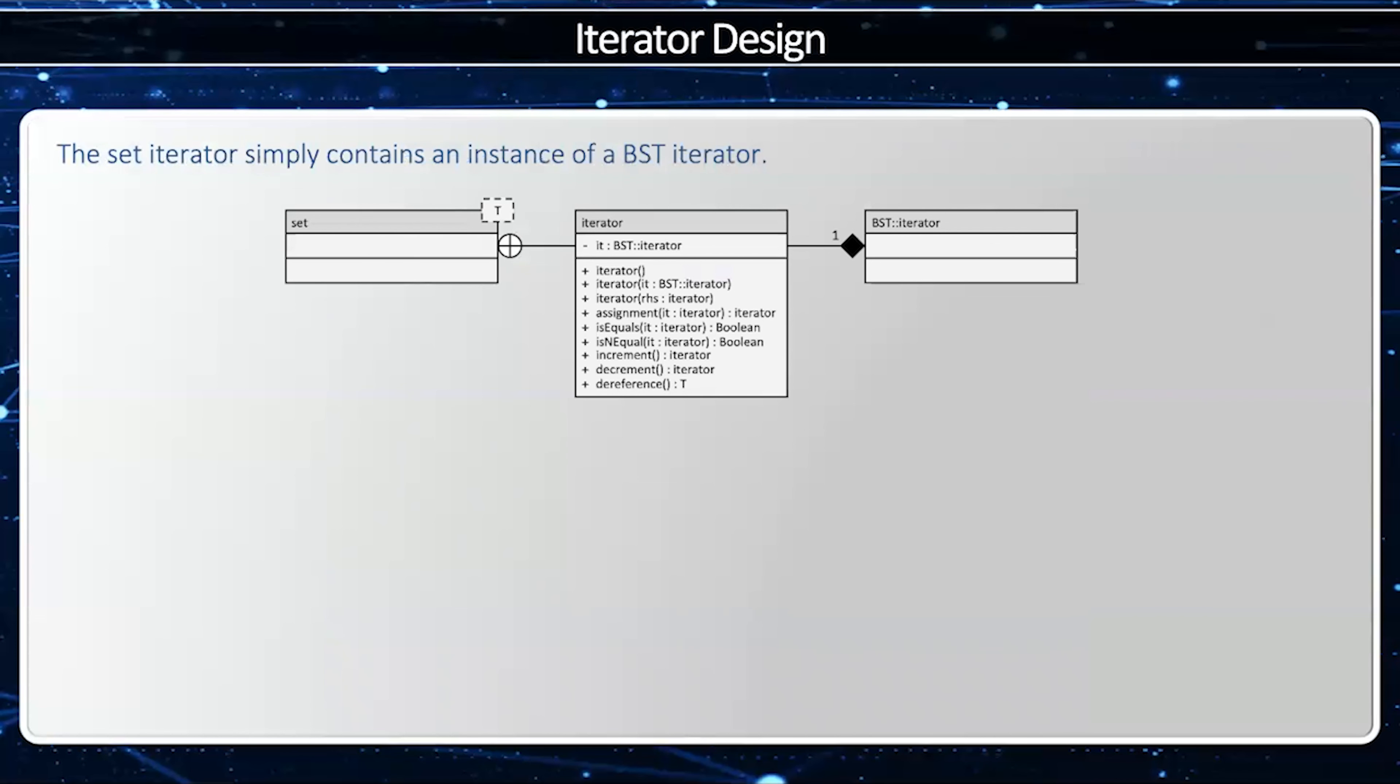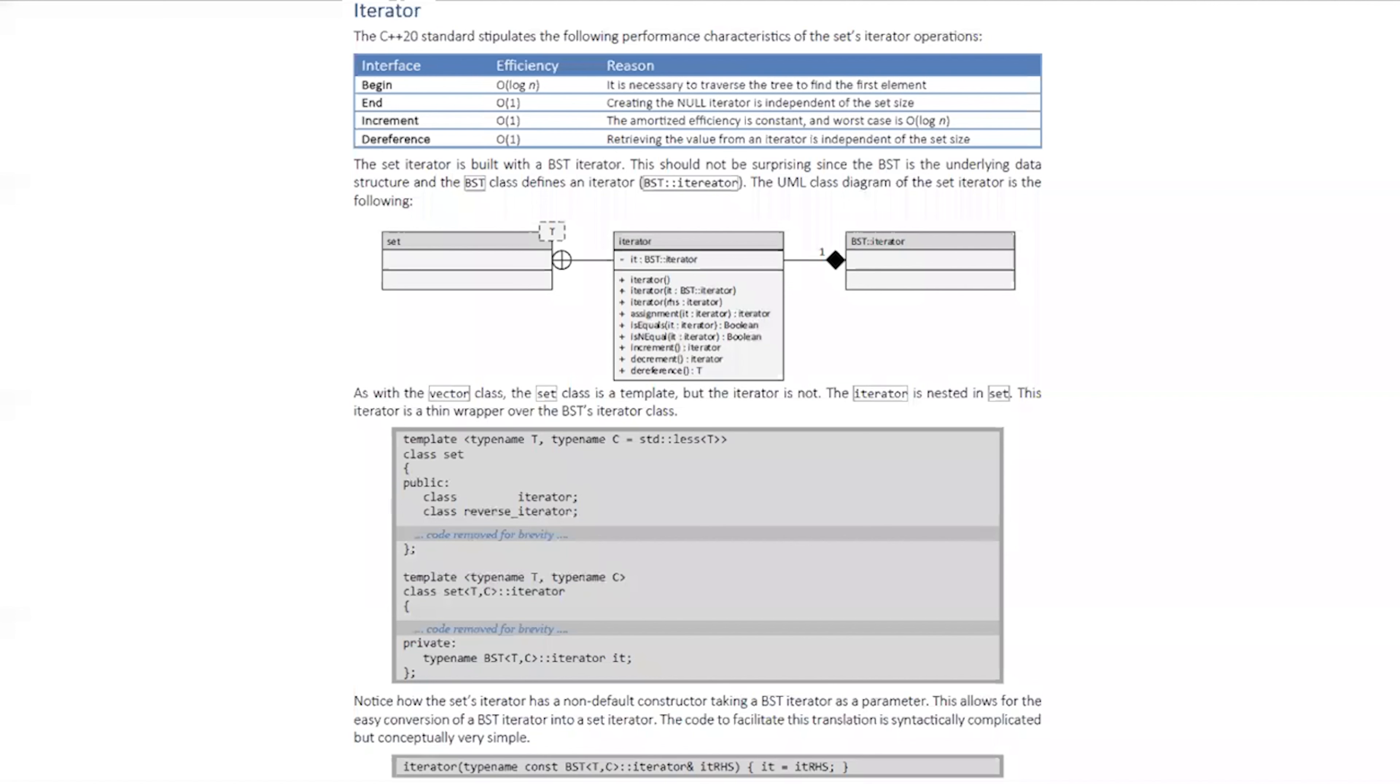Now the iterator itself is once again a thin veneer for the BST iterator. So it has a single member variable, which is the BST iterator. And all the methods are going to be just a mapping from the set's iterator to the BST iterator and back. Very simple. You can learn more about the set's implementation in the set chapter of the C++ Data Structures textbook.